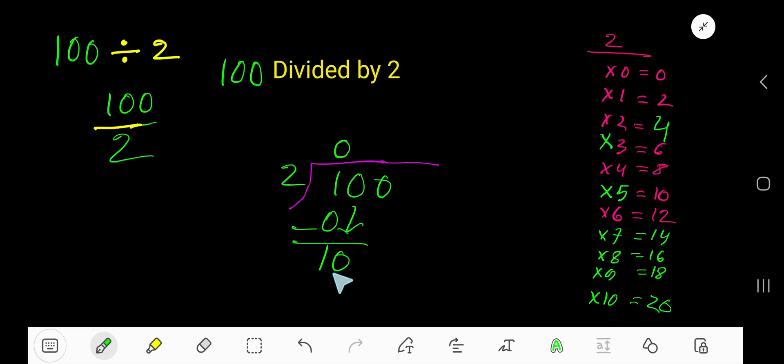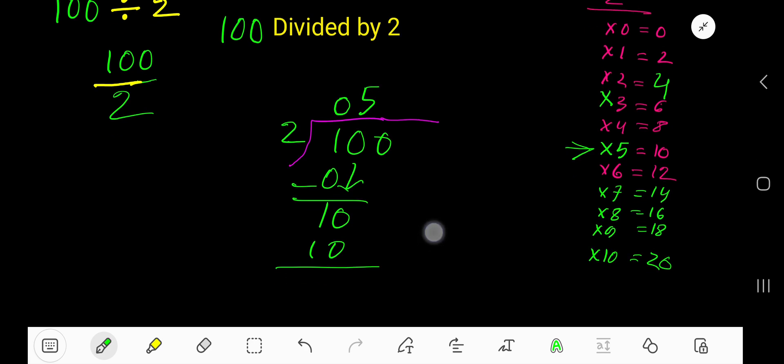Now divide. 2 goes into 10 how many times? 5 times, right? 5 times 2 is 10. You subtract, you are getting 0. Bring down this 0.